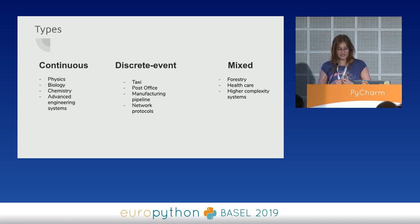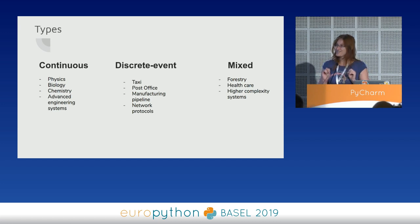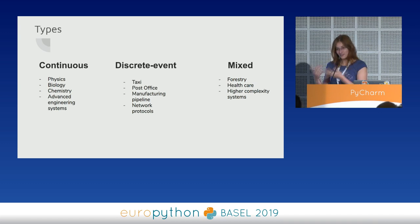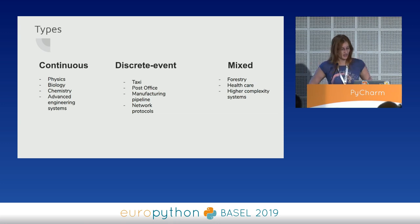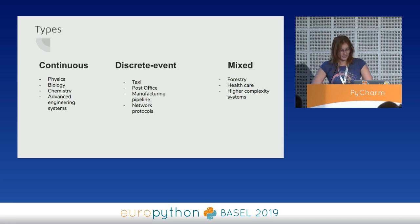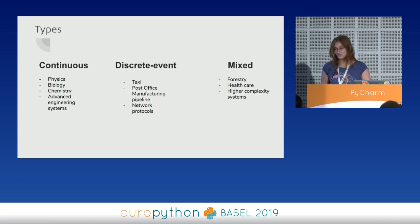A second type is discrete event simulation, which covers most man-made systems. For instance, a post office — an event occurs and something happens only when somebody like a customer is present. Manufacturing pipelines, logistics systems, and things like that can be modeled in discrete event simulation. Right now, most production-ready simulation frameworks are actually mixed.